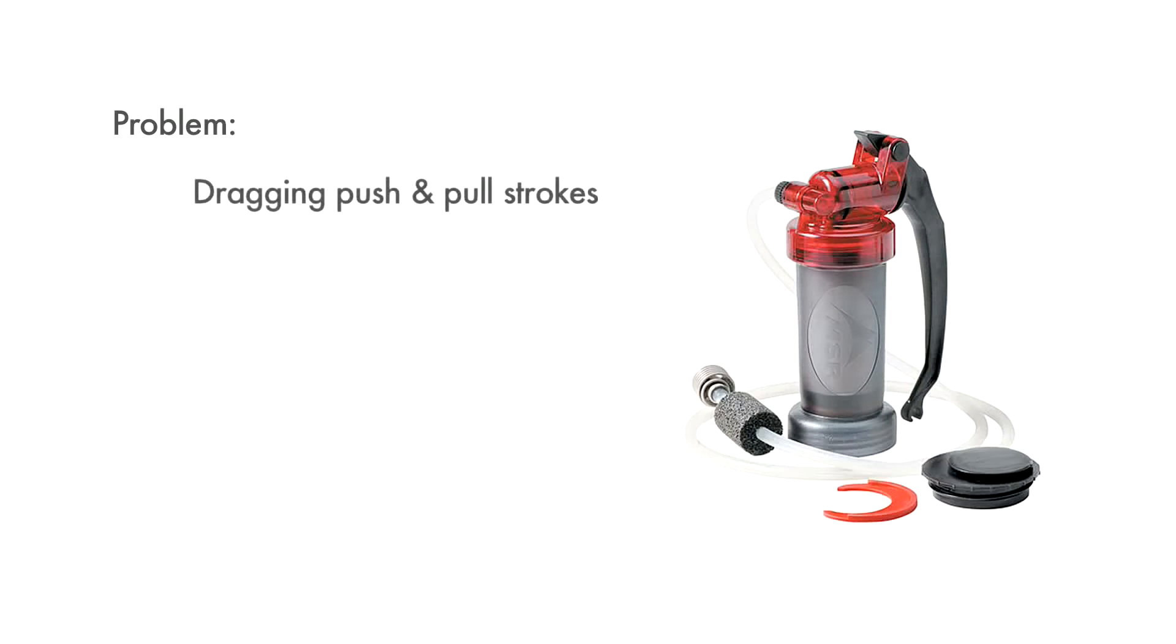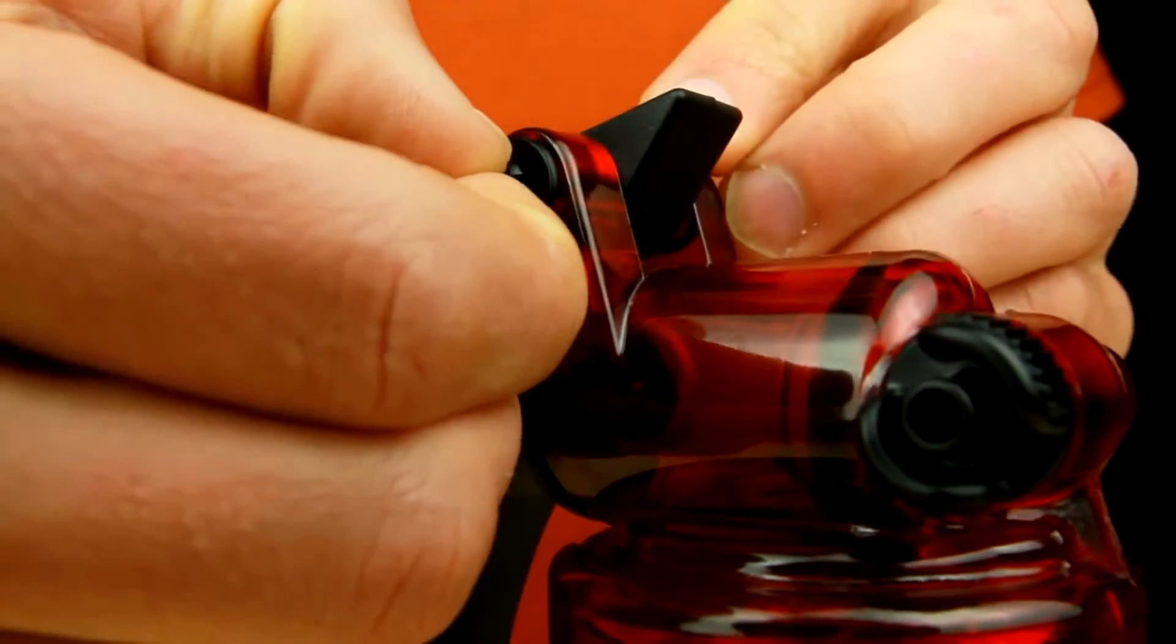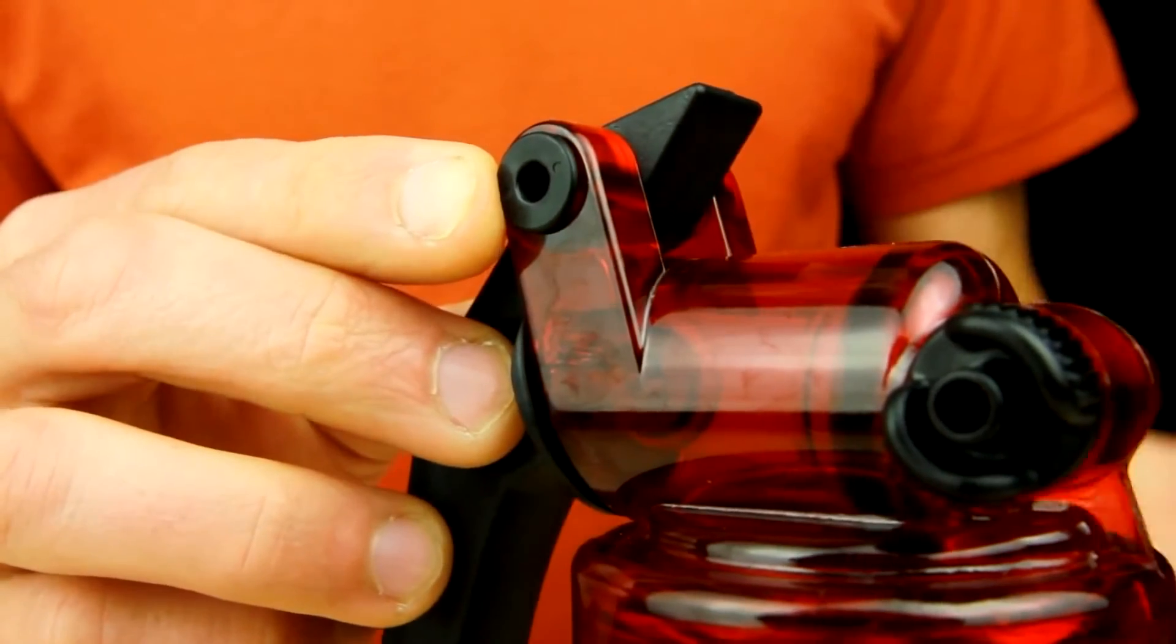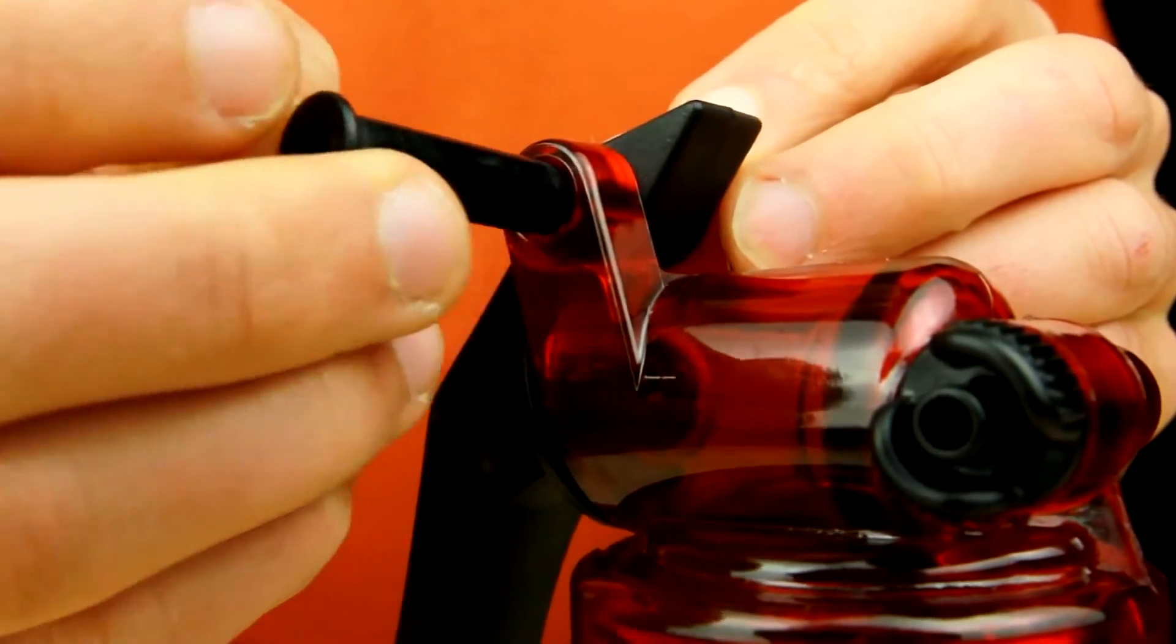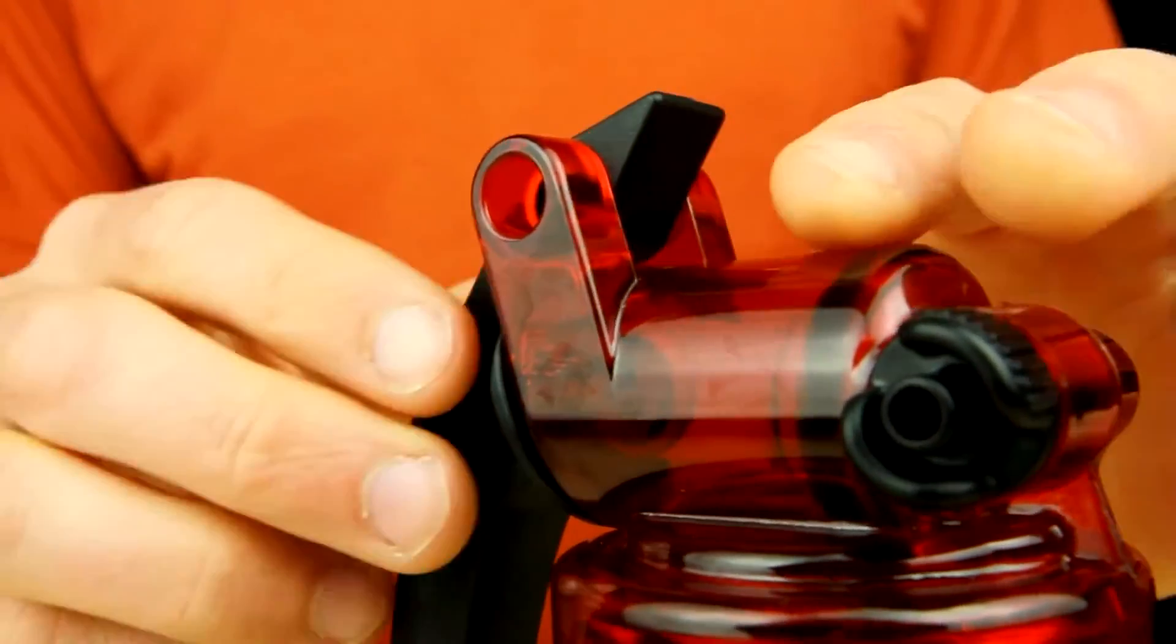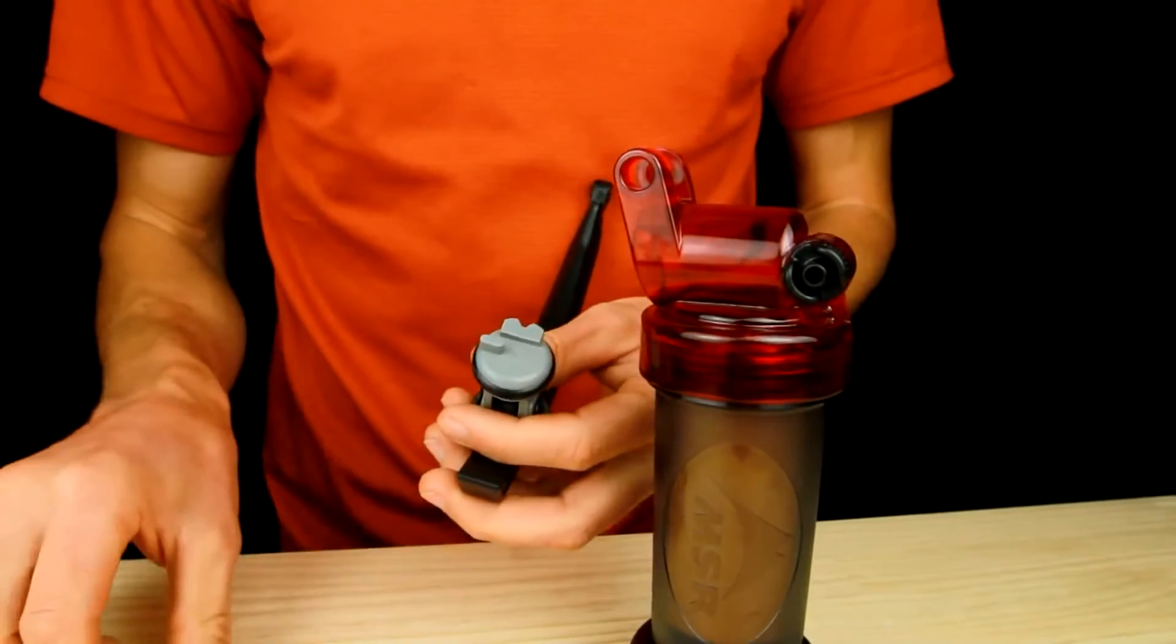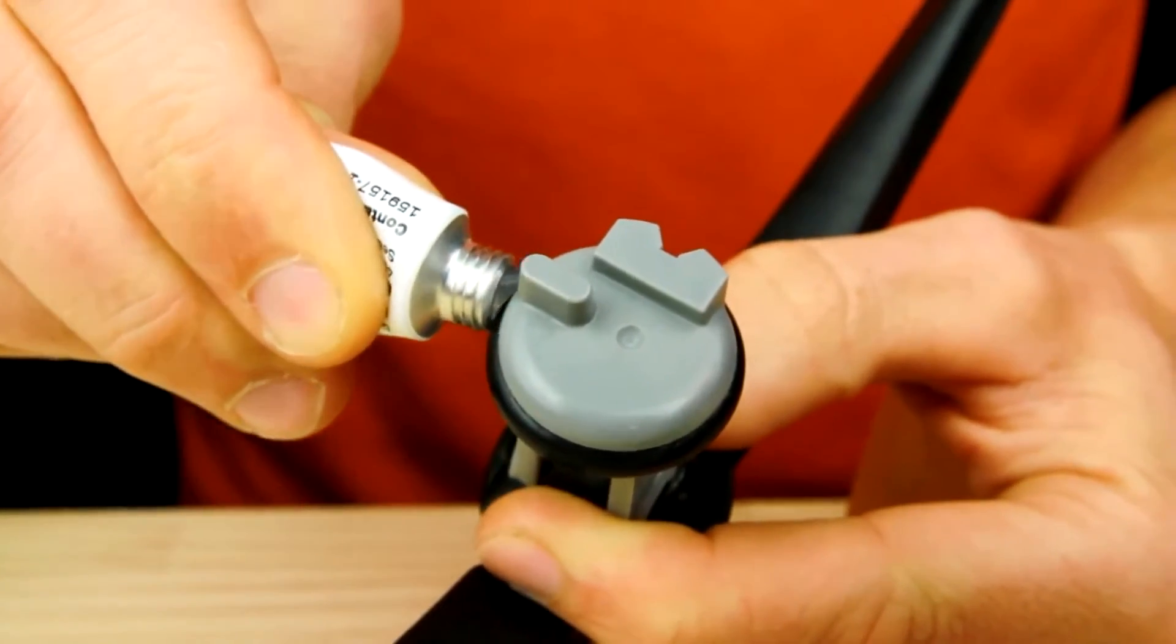Dragging push and pull strokes could indicate a dry piston O-ring. To lubricate the piston O-ring, pull out the pump head pin and pump head bushing. Remove the handle and piston assembly. Lubricate the piston O-ring with MSR Water Filter Silicone Lubricant and reassemble the filter.